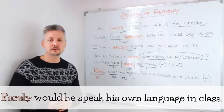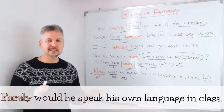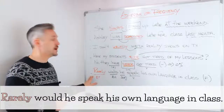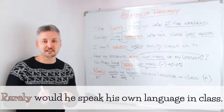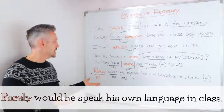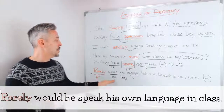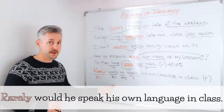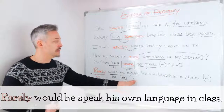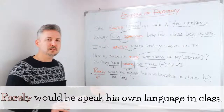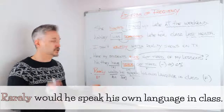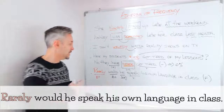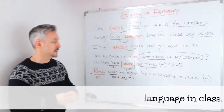Now let's take a look at the last example, which may sound a little unusual because it's a formal construction: "Rarely would he speak his own language in class." Here we use the adverb of frequency before anything else to stress the point. "Would" is the auxiliary, "he" is the subject, and "speak his own language in class" is the main verb. So: adverb of frequency first, then auxiliary, then subject, then main verb. You will see this in formal contexts.